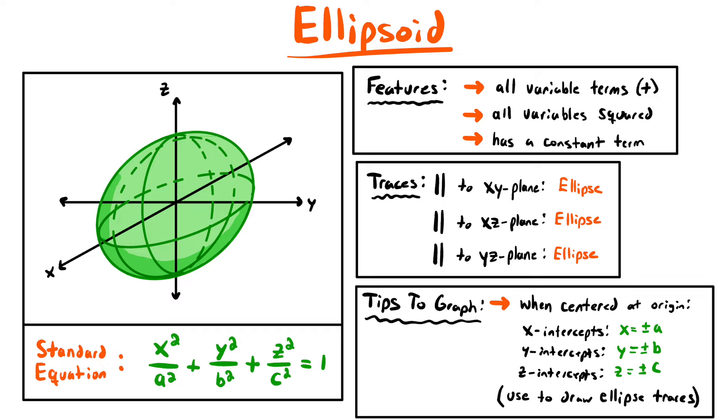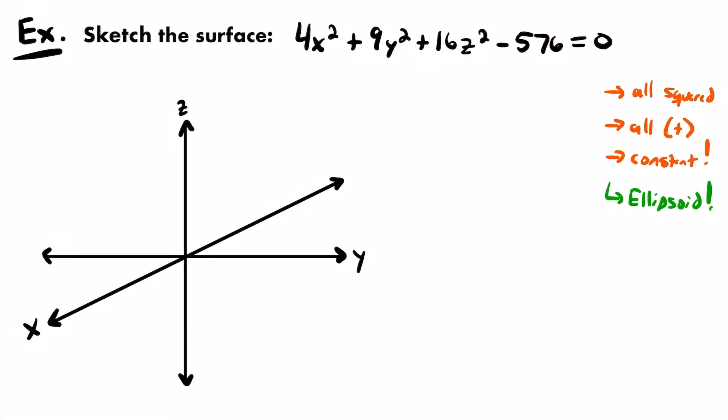These three features match up with what the equation looks like for an ellipsoid — essentially an ellipse in 3D. That is the type of quadric surface we are working with here. However, we can't quite sketch it yet because this equation is not in standard form. We want our equations in standard form to help us more easily sketch our quadric surfaces.